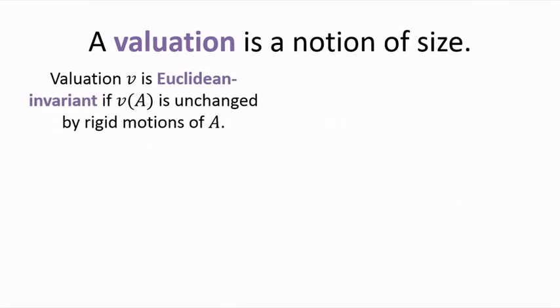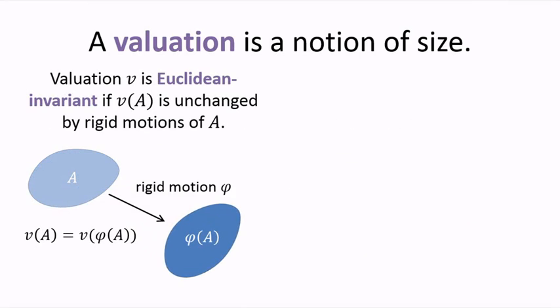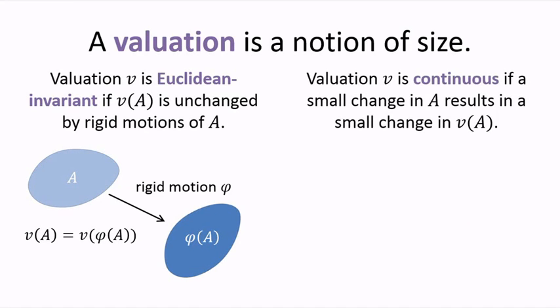We say that a valuation is Euclidean invariant if it is unchanged by rigid motions of sets. That is, if I translate or rotate set A, the valuation v of A doesn't change. Also, valuation v is continuous if a small change in A results in a small change in v of A.